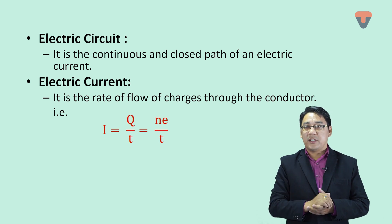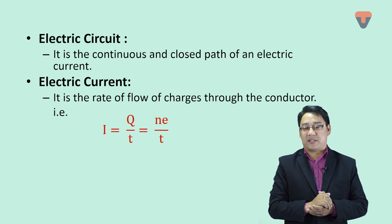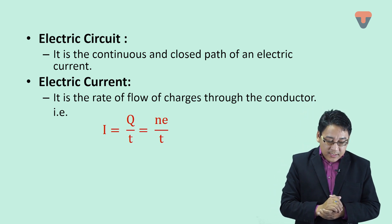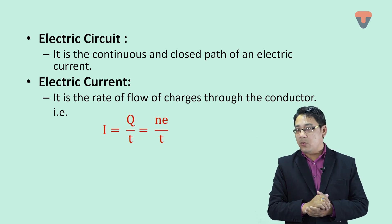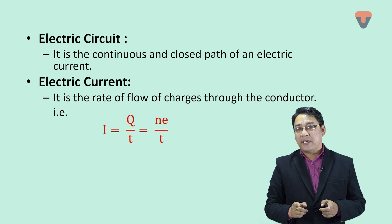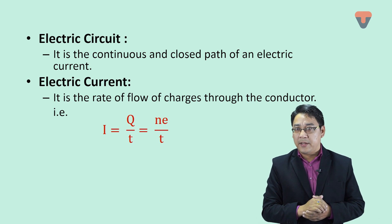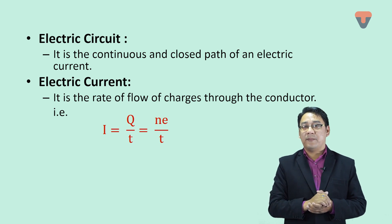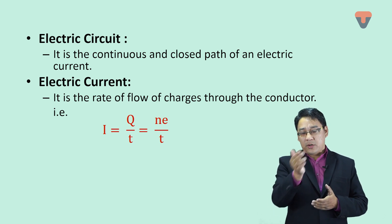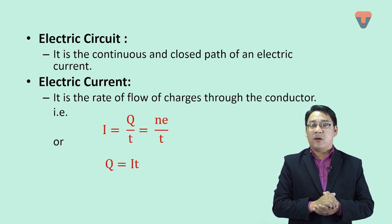What is this Q? We call it charge. And what is small t? That is the time period of flow of this charge. By the law of quantization, Q equals plus minus ne, so we can write I equals ne by T. If T is transposed to the other side, we get Q equals IT.